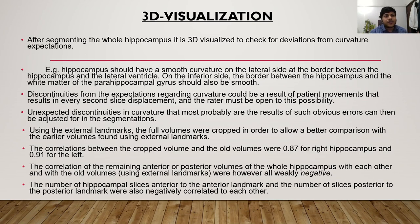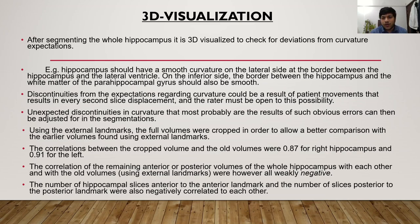3D visualization: after segmenting the whole hippocampus, it is 3D visualized to check for deviations from curvature expectations. Hippocampus should have a smooth curvature on the lateral side at the border between the hippocampus and the lateral ventricle. On the inferior side, the border between the hippocampus and the white matter of the parahippocampal gyrus should also be smooth. Discontinuities from expected curvature could result from patient movements causing every second slice displacement, and the rater must be aware of this possibility. Unexpected discontinuities that are most probably results of such errors can be adjusted in the segmentations. Using external landmarks, the full volumes were cropped to allow better comparison with earlier volumes found using external landmarks.